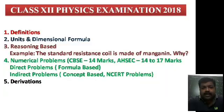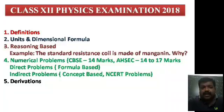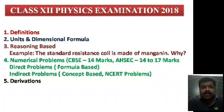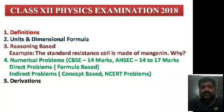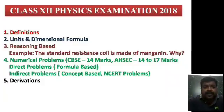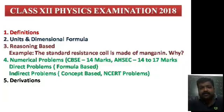Then there may be a few questions based on reasoning type. For example: a standard resistance coil is made of manganin — why? The reason given in the NCERT is that manganin has very low temperature coefficient of resistivity, so even if there is a variation in temperature, the resistivity or resistance won't change much. Because of this, the standard resistance coil is made of manganin.